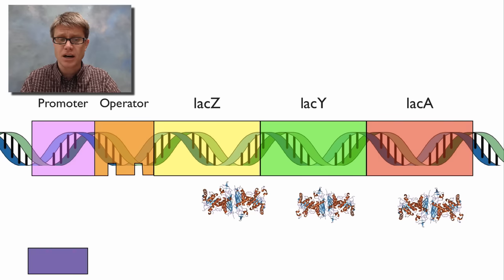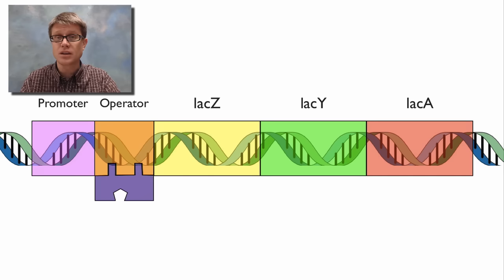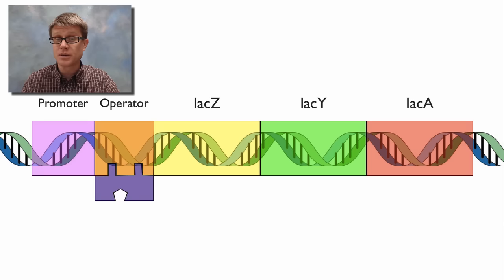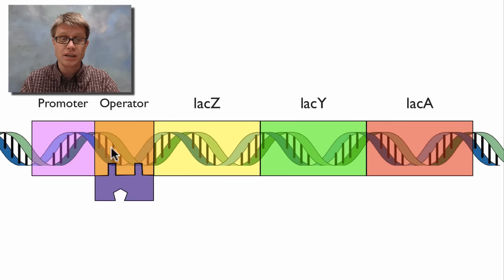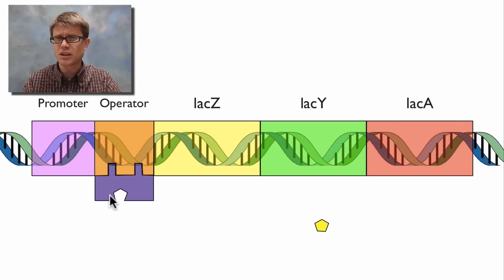Now all the lactose is gone. What happens to the repressor? It returns to its original shape, and that shape fits back into the operator. If there's no lactose present, the operator is in the off position because the repressor is activated — sitting inside the operator, physically blocking the movement of RNA polymerase. It can't move down and code for those genes. Then lactose shows up again, binds to the repressor, frees it up, and the genes can be made again.